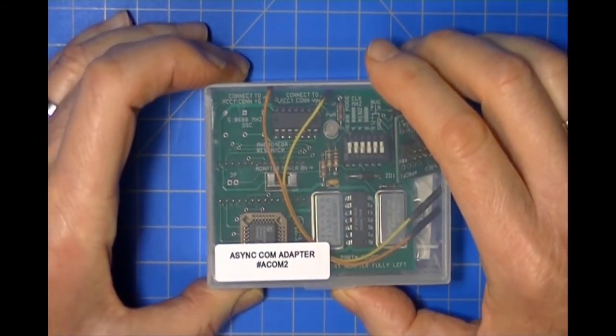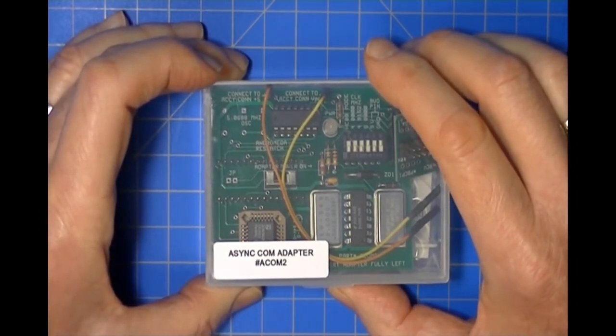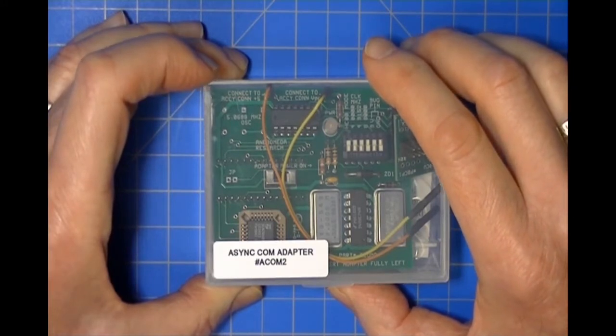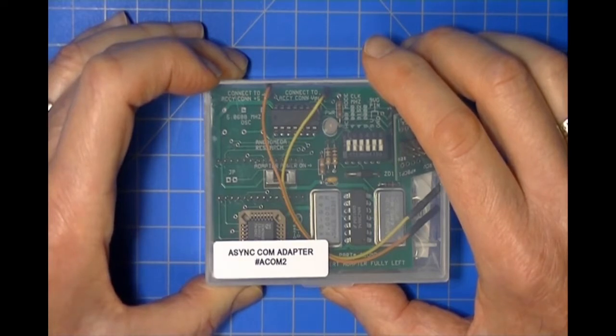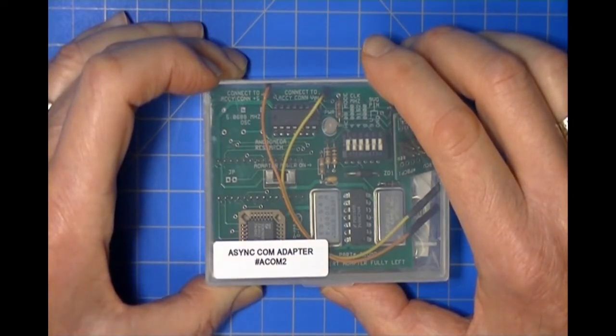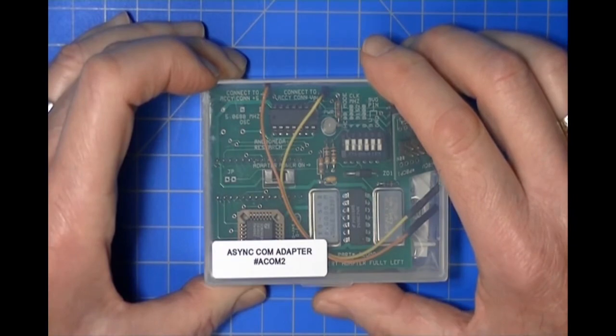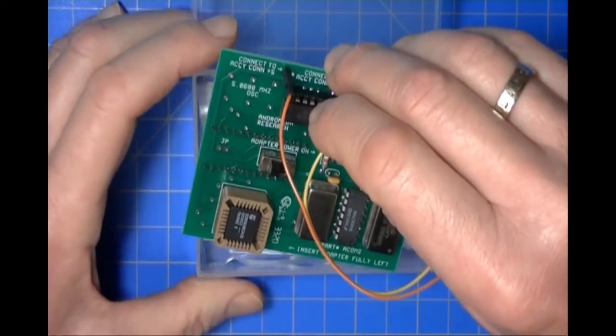As I said, there was an ACOM 1 which didn't do as many different families of the Motorola microcontroller as the ACOM 2. The ACOM 2 addresses the 05 family, the 08-09 family, the 908 family, and the 11 family. Let's take it out of its box.